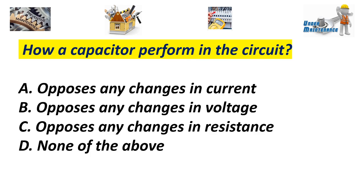How a capacitor performs in the circuit. A. Opposes any change in current. B. Opposes any change in voltage. C. Opposes any change in resistance. D. None of the above. Answer B. Opposes any change in voltage.